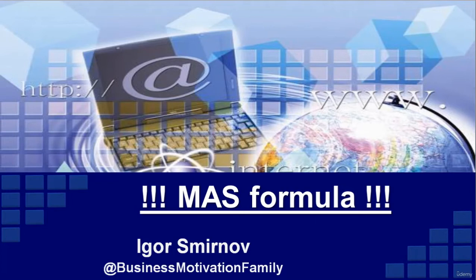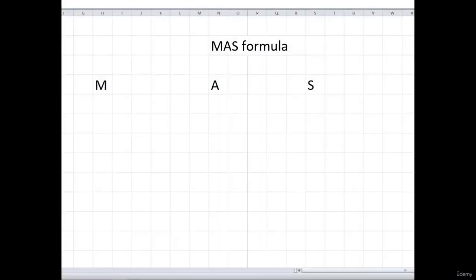Without further ado, let's get to the formula and let me show you how you can use it for your benefit. Let me break down what the MASS formula stands for. The letter M stands for Monetization, because that's the first key element of the business. The key here is to find a single lead conversion mechanism that works for you.